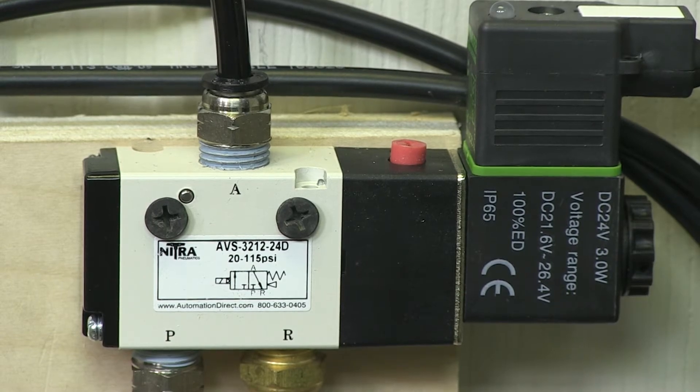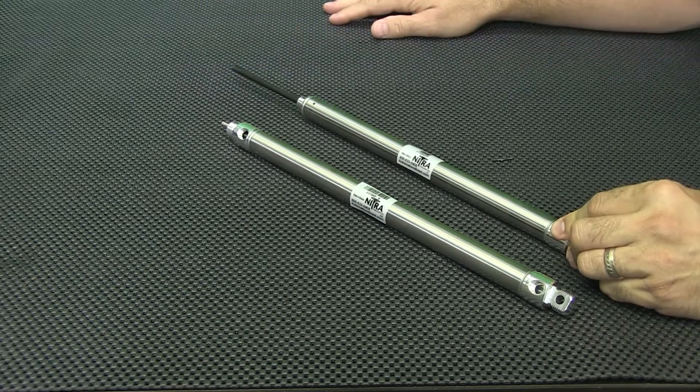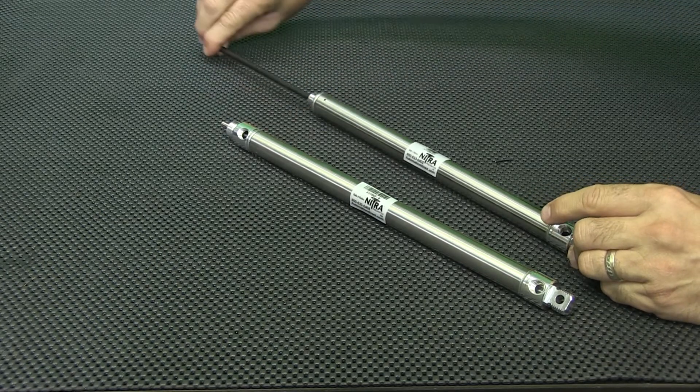When the output turns on, the valve is open, the cylinder extends. When the output turns off, the valve closes, the cylinder pressure is released and the internal spring retracts the cylinder rod.